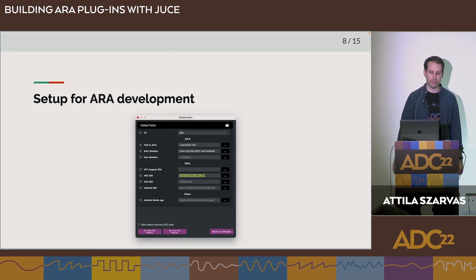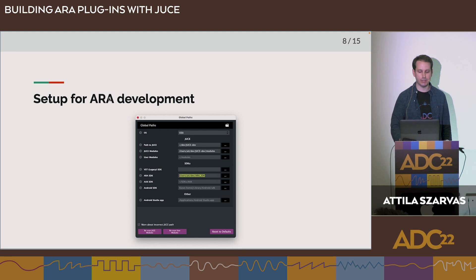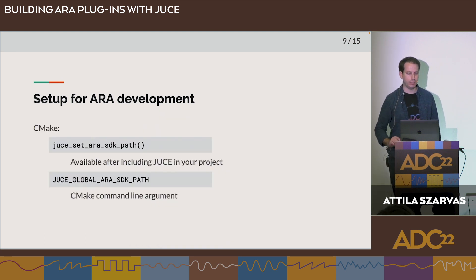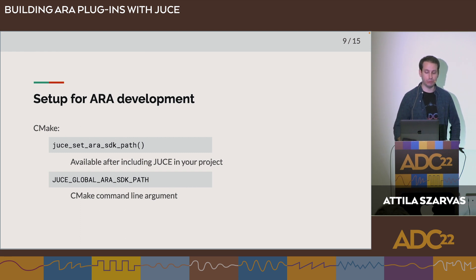Once you have downloaded the SDK, you can configure the path in the producer. Go into Preferences > Global Paths, and there is now an extra field for ERA SDK. This configuration also has to be made in CMake. You can use either the JUCE_set_ERA_SDK_path command in your CMakeLists.txt file after including the JUICE library, or the JUCE_GLOBAL_ERA_SDK_PATH CMake variable, which you can put into the cache or pass as a command line argument. It's enough to use one of these options.